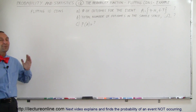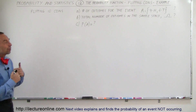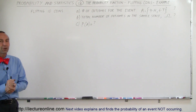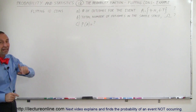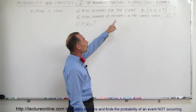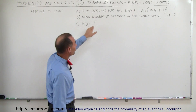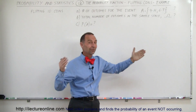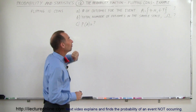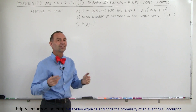Welcome to Electra Online. Let's see if we've learned what we saw in the last couple of videos — how to find the probability of a certain outcome when we flip a certain number of coins. In this case, we have 10 coins, and we're looking for the following things: the number of outcomes for the event where we have 4 heads and 6 tails, the total number of outcomes in the sample space for flipping 10 coins, and the probability of getting 4 heads and 6 tails.